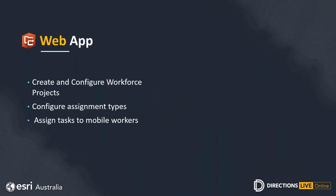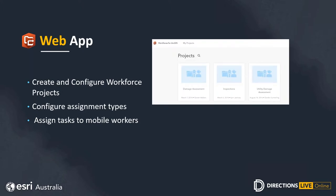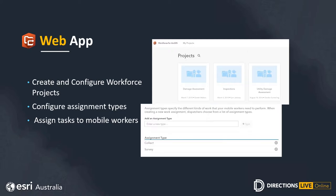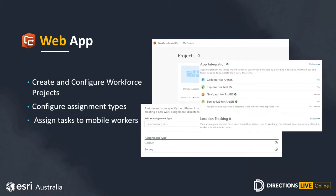Let's have a look at what we get as part of Workforce for ArcGIS. Workforce is made up of two parts: the web app and the mobile app. From within ArcGIS Online, we can use the Workforce web application to create and configure Workforce projects. A Workforce project contains multiple assignment types — the work that field crews are likely to complete. We can configure these assignment types to utilise other mobile apps such as Collector for ArcGIS, Survey123, Explorer for ArcGIS, and Navigator for ArcGIS.